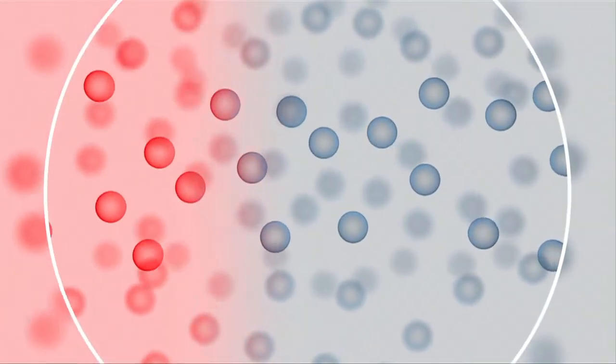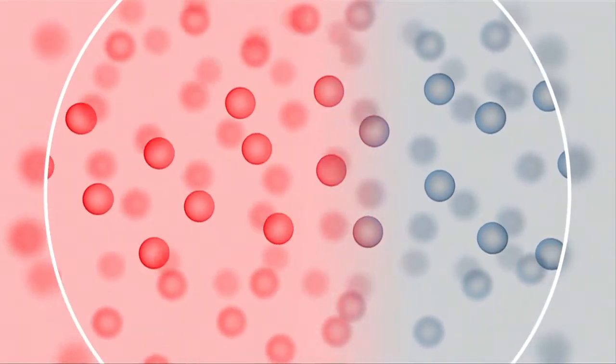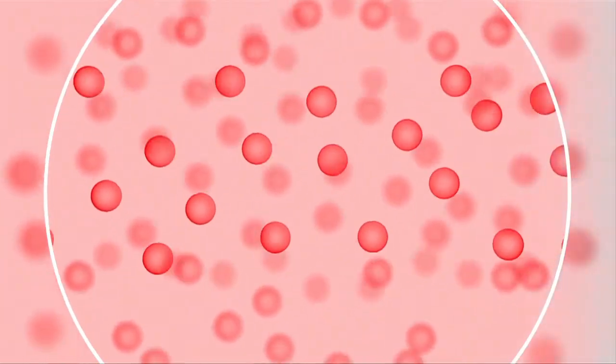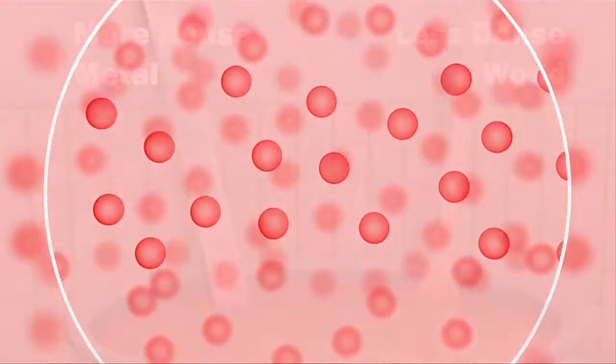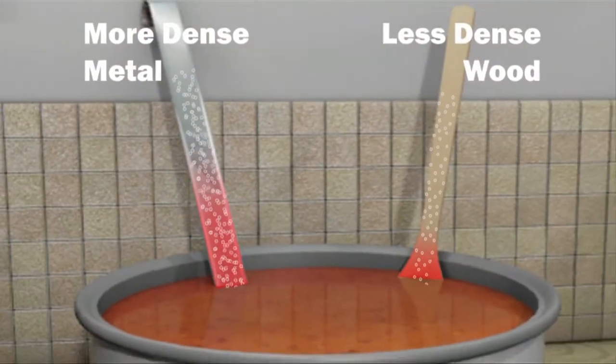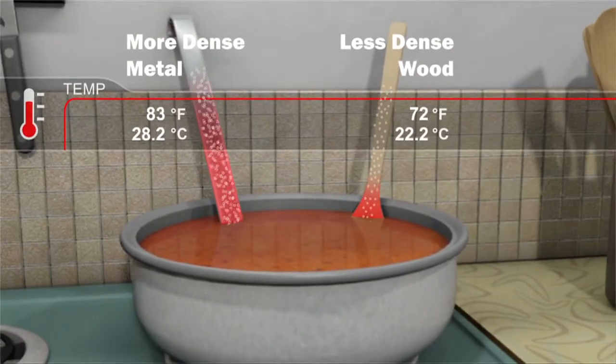Conduction is the transfer of energy between molecules through direct contact. The faster moving molecule transfers some of its energy to the molecule it hits, like billiard balls. Since conduction works via collisions, the denser the material, the faster the transfer.